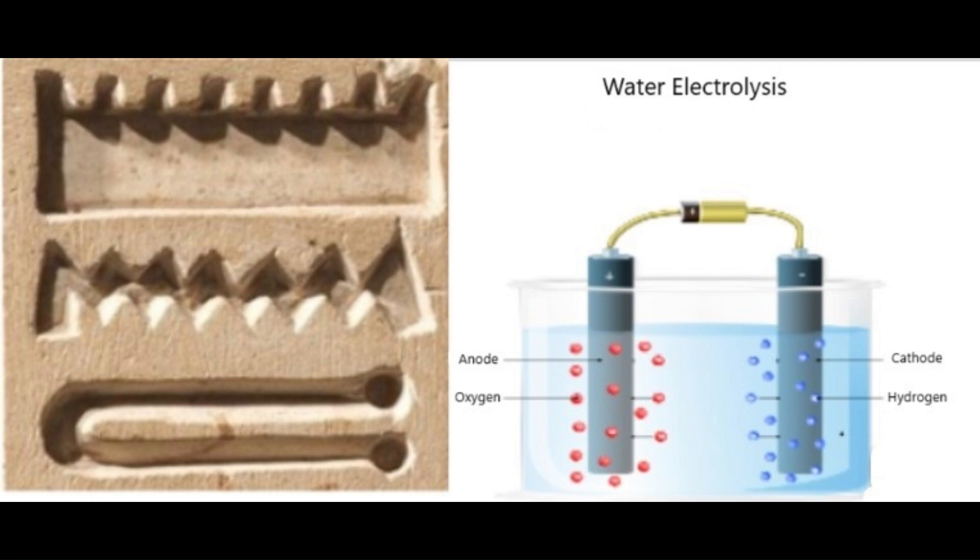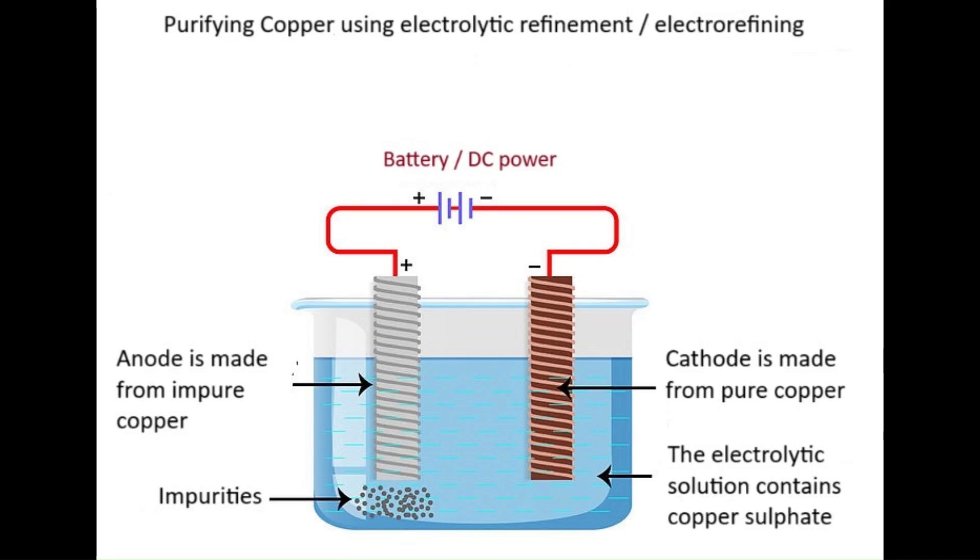For example, it's in a process called electrolytic refining. Electrolytic refining is a technique used for the extraction and purification of metals by the process of electrolysis. Metals like copper, nickel, gold, lead, silver and zinc can be purified this way.